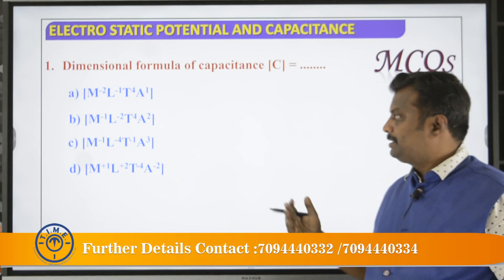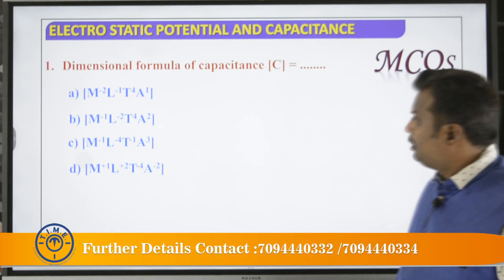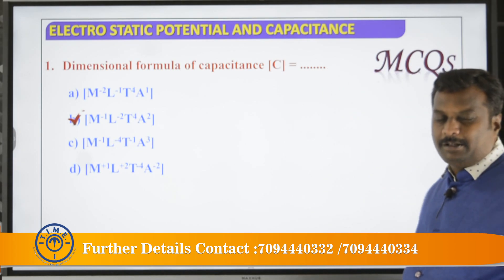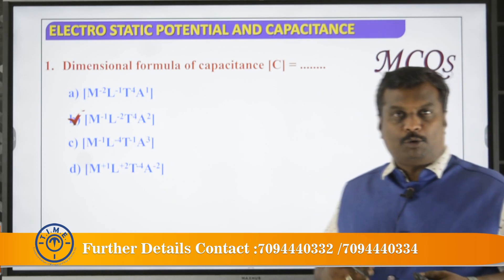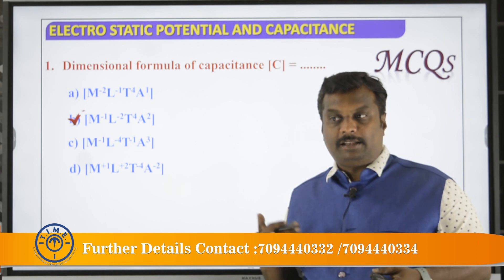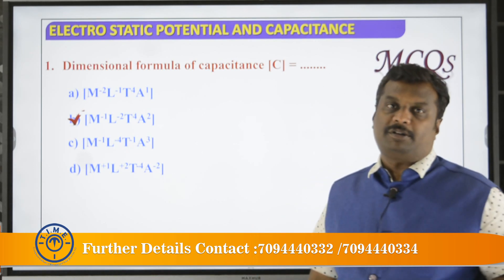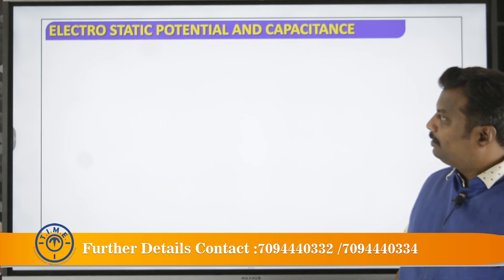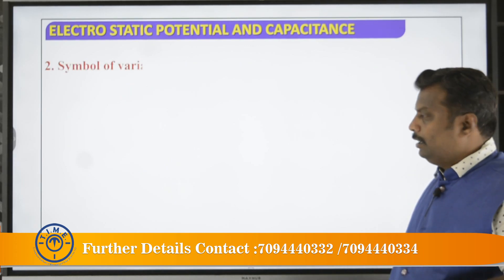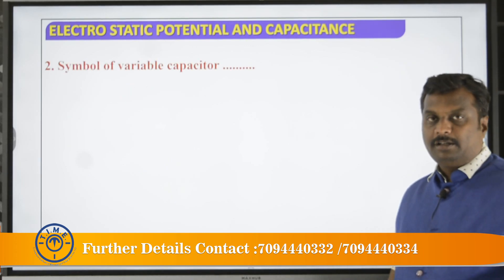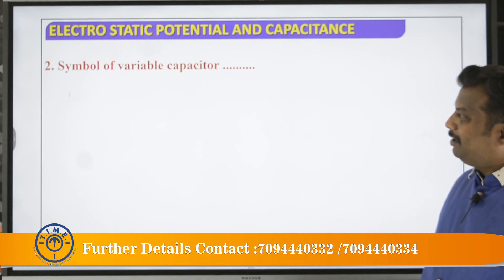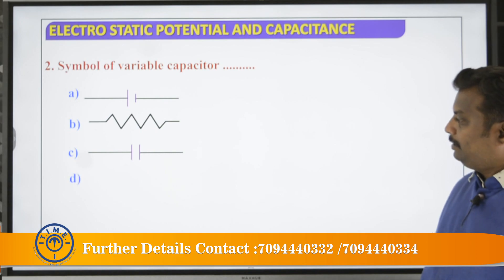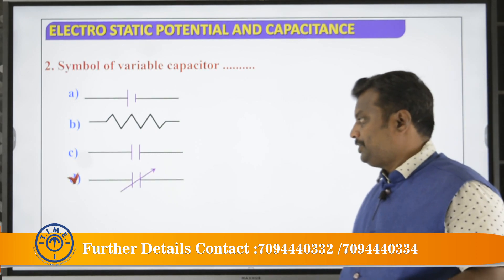What is the dimensional formula for capacitance? The answer involves M to the power of negative 1, A squared. What is the symbol of a variable capacitor? The right answer for fixed capacitor versus variable capacitor is option D.